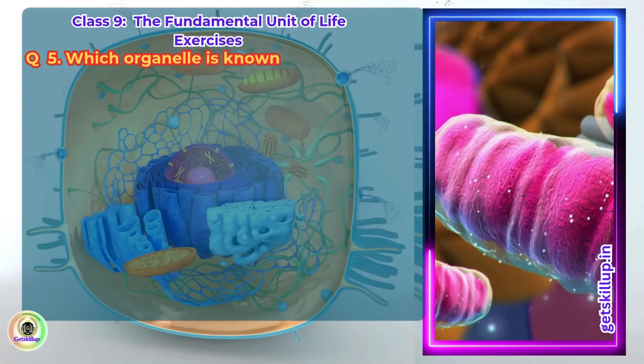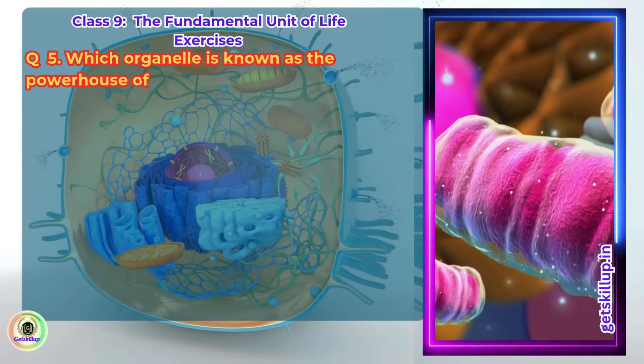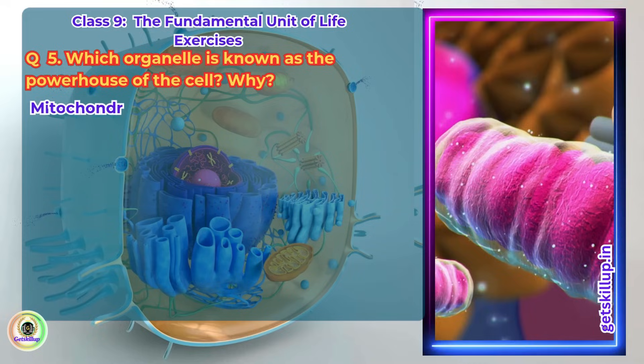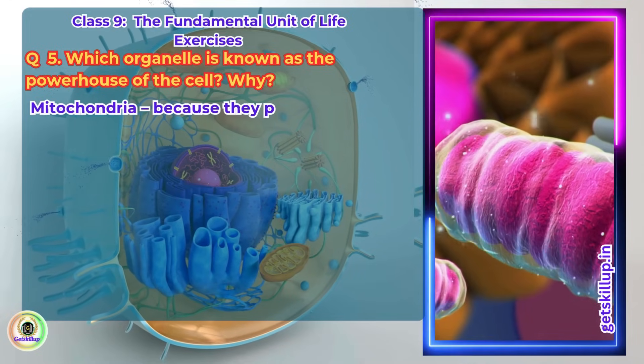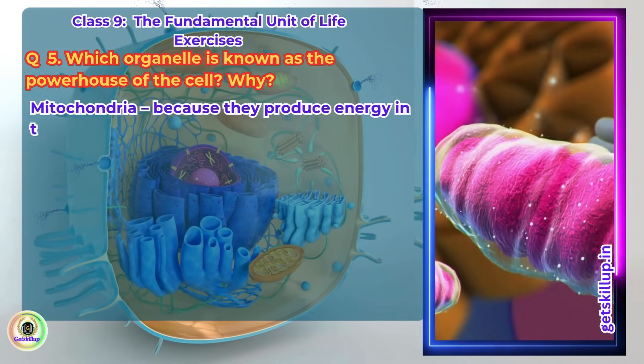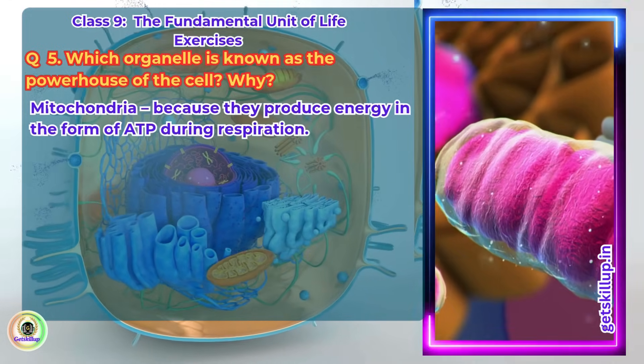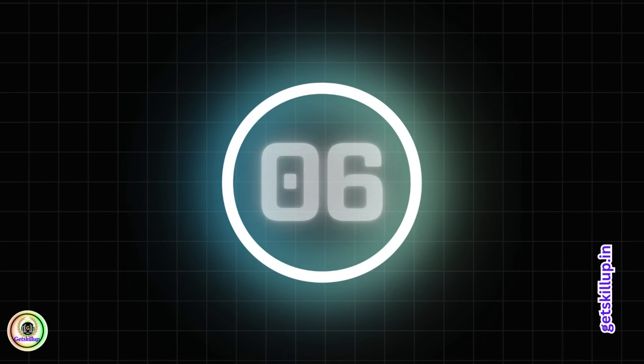Q5. Which organelle is known as the powerhouse of the cell? Why? Mitochondria, because they produce energy in the form of ATP during respiration.